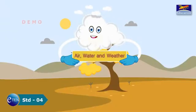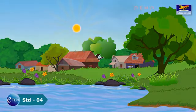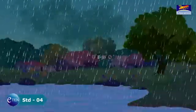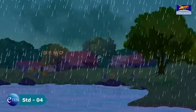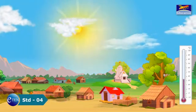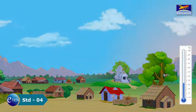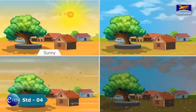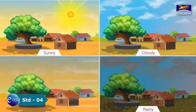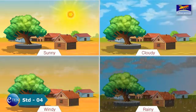Air, Water and Weather. Have you ever seen a clear sky turn dark and stormy? You might wonder why. Change in temperature affects the weather of a particular place. The temperature begins to rise after sunrise and begins to fall before sunset. It may be sunny on some days while it may be cloudy on others. It may rain on some days while it may be windy on other days. This sudden change in the atmosphere is called weather.